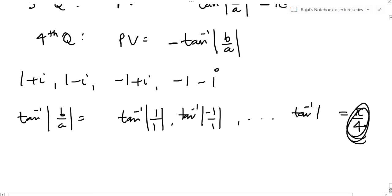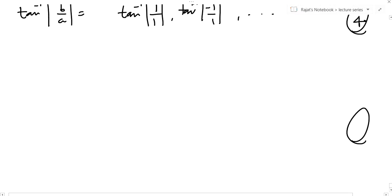If it is the first quadrant, then the point was 1 plus i and principal argument will be tan inverse 1 which equals π by 4.